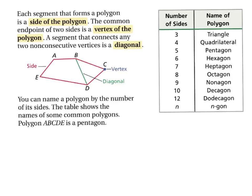Back in Section 2.4, you learned what a polygon was. Now you're going to learn parts of a polygon and how they determine other types of shapes. Each segment of a polygon is called a side. Each vertex is the common endpoint of two sides, and a diagonal is a segment that connects any two non-consecutive vertices.